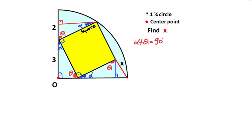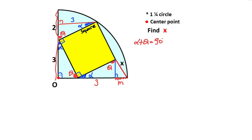We know that congruent triangles have the same sides and angles. That means if there is a three-unit side opposite theta, the side opposite theta here must also equal three units. Likewise, this side is also three units. Let's call this length m units. We know that the radius of the quarter circle is five.